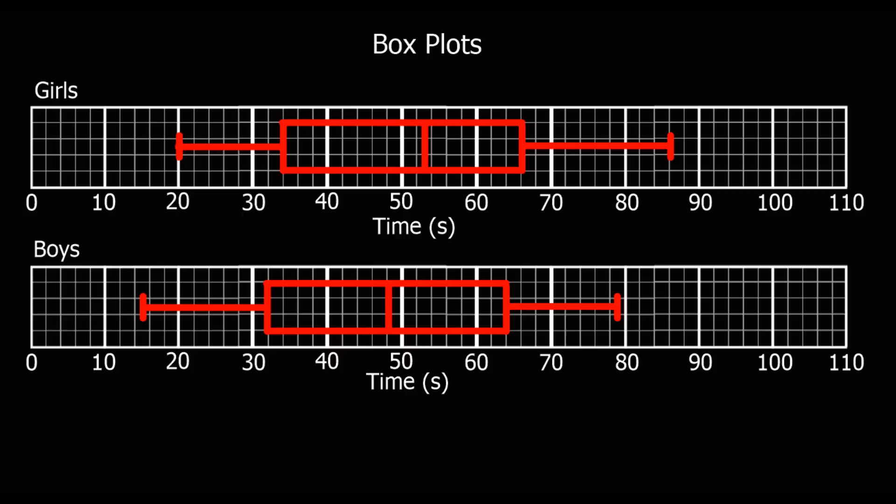The other thing we do with boxplots is what they're really useful for is comparing two sets of data. So this is the time boys and girls took to do a task. To compare them, always try to compare the median. So the median is the average. So try and compare the median and a measure of range, measure of spread. So interquartile range.